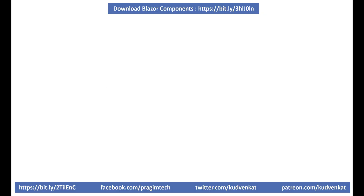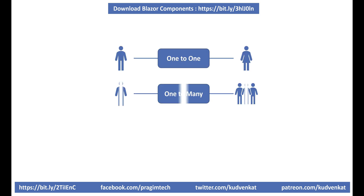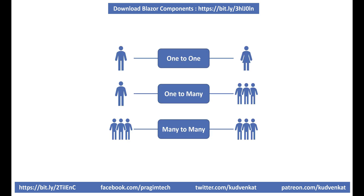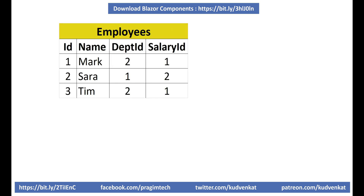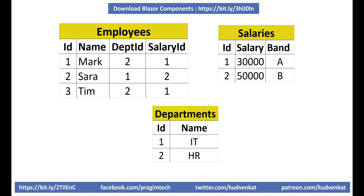The following are the three different types of relationships between database tables: one-to-one, one-to-many, and many-to-many. Consider these three database tables: employees, salaries, and departments. We have a one-to-one relationship between employees and salaries, and between employees and departments. Department id in the employees table is a foreign key referencing the id column in the departments table, and salary id in the employees table is a foreign key referencing the id column in the salaries table.